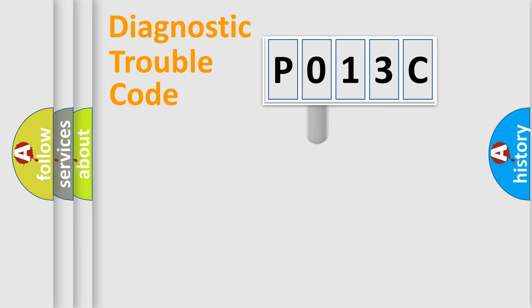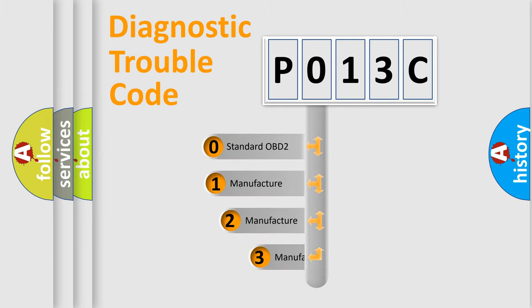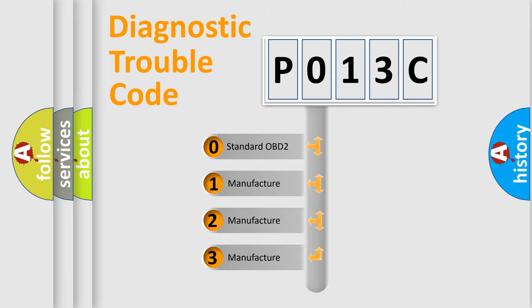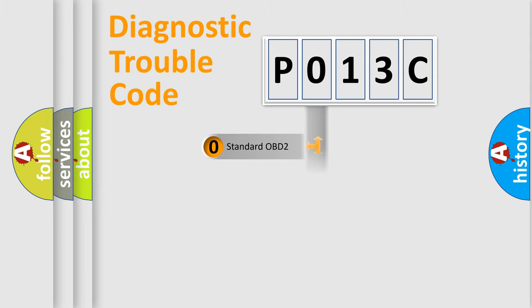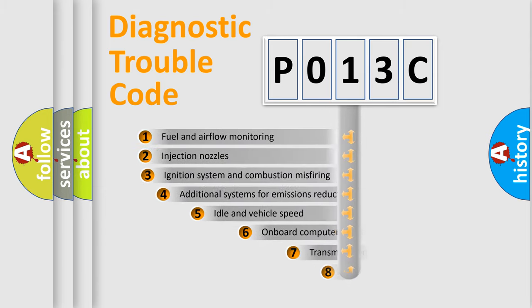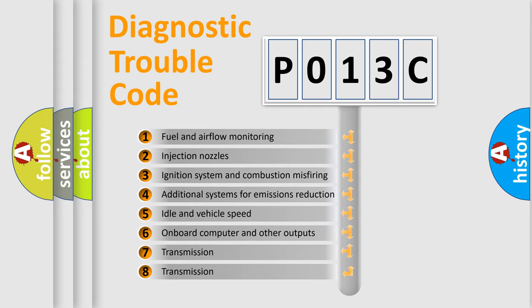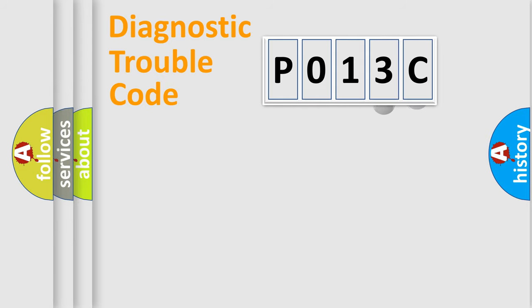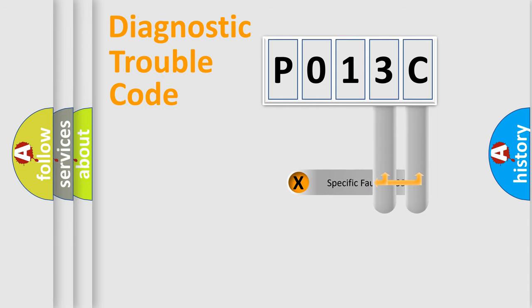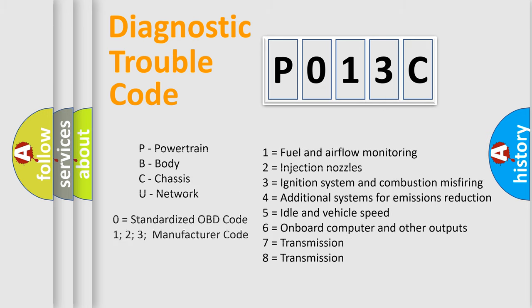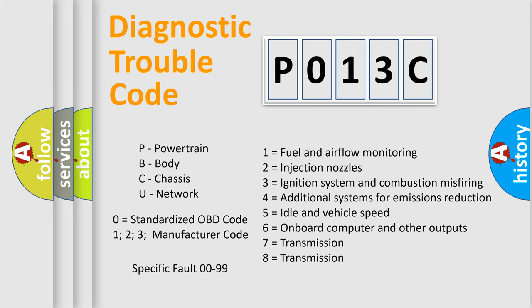This distribution is defined in the first character of the code. If the second character is expressed as zero, it is a standardized error. In the case of numbers 1, 2, or 3, it is a more specific car-manufacturer error. The third character specifies a subset of errors. Only the last two characters define the specific fault of the group — but this division is valid only when the second character is zero.